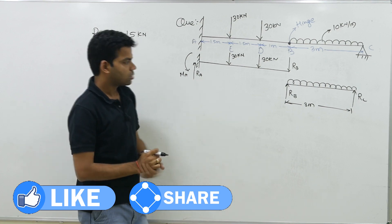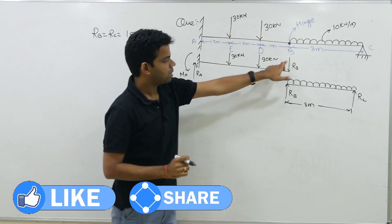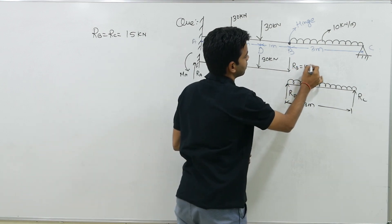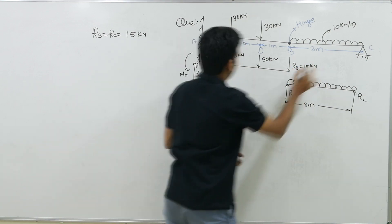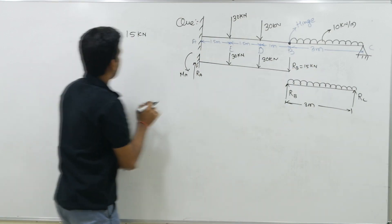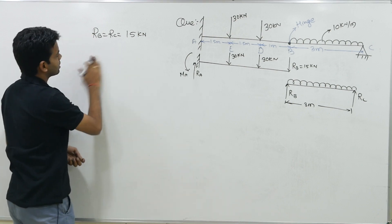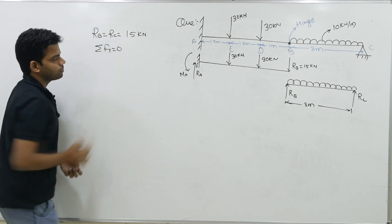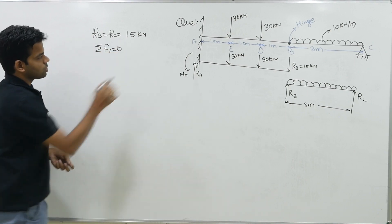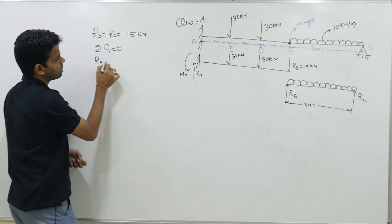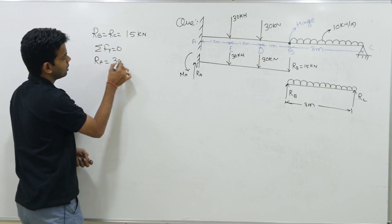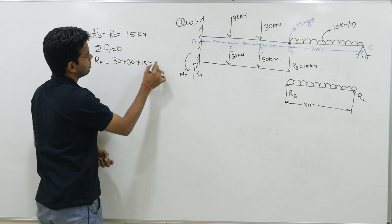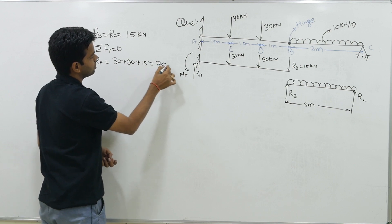RB and RC values are obtained as 15 kN each. Now I can determine RA. Using summation of FY = 0, RA = 30 + 30 + 15 = 75 kN.